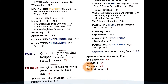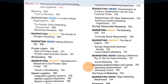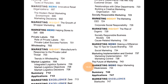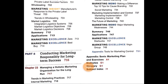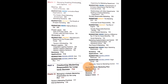Part 8, the final part, is Conducting Marketing Responsibilities for Long-term Success. Chapter 23 is Managing a Holistic Marketing Organization for the Long Run, covering trends in marketing, the marketing process, characteristics of company departments that are truly customer-driven, relationships with other departments, building a creative marketing organization, and socially responsible marketing. This is the last chapter of the book, which comprises 23 chapters in total.